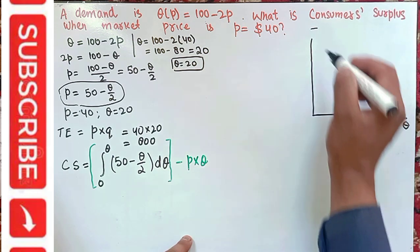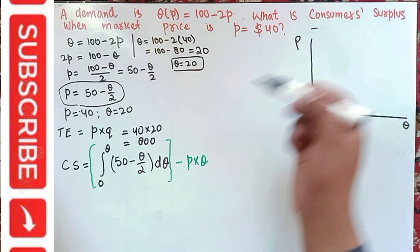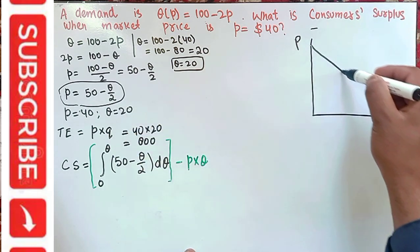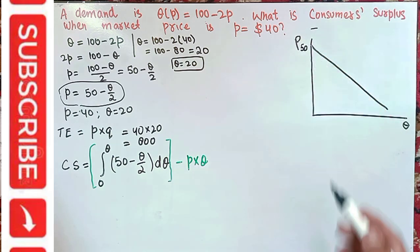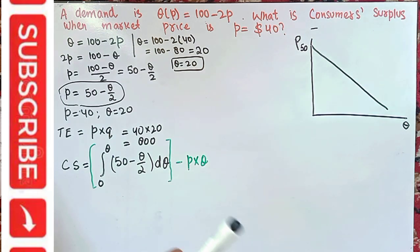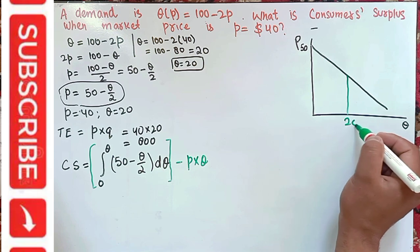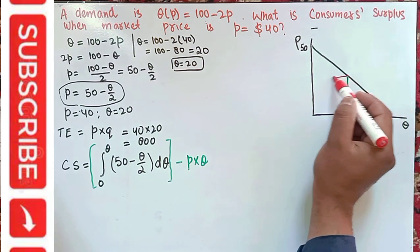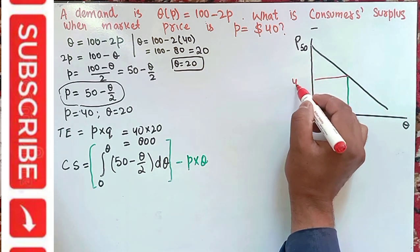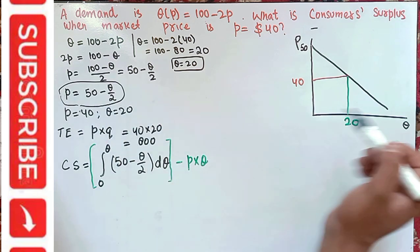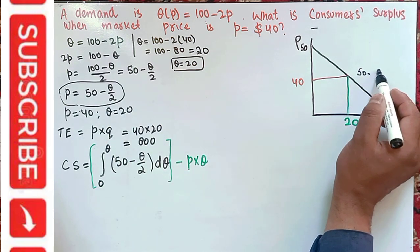In parallel, let me show this graphically. On the graph, quantity is on the horizontal axis and price is on the vertical axis. The inverse demand function has an intercept of 50 and a slope of one-half. The equilibrium quantity is 20 and the equilibrium price is 40, giving us the demand curve p = 50 minus q/2.